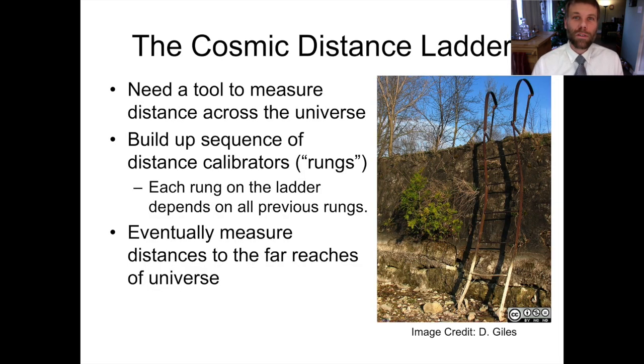The cosmic distance ladder is basically a tool that we use to bootstrap our way from the things nearby that we can measure relatively easily, like the structure and size of the solar system, and working through a group of increasingly distant calibration indicators until we eventually get to a point that lets us measure distances across the universe as a whole. Each rung on the ladder builds on all of the rungs below it. If one of those rungs breaks, all of the conclusions that we drew using the ladder then comes into question.